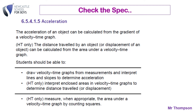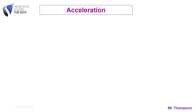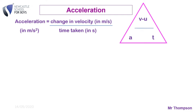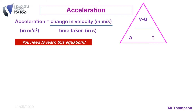You should be able to draw these graphs and determine the acceleration, and also work out the areas under these to find the distance or displacement. So what is acceleration? Acceleration is how much things speed up — it's a change in velocity over the time taken. We often write that in a triangle, where V minus U is called delta V, the change in velocity. V is the final velocity, U is the initial velocity. You need to be able to rearrange this equation.